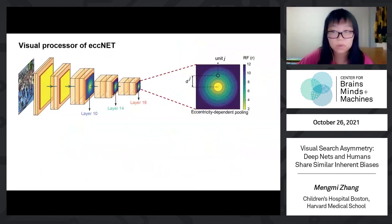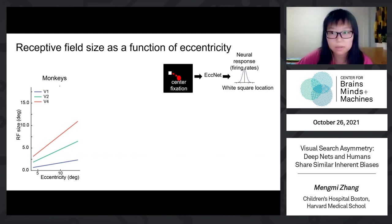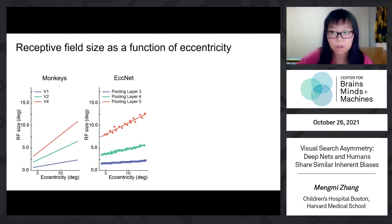Let's zoom into the proposed eccentricity-dependent pooling layer and see how it works. In this example, the model is fixating the center of the image. For any given unit G, its pooling window size is a function of its eccentricity — the further away the unit G is from the center fixation, the larger the pooling window size. We reproduce the plot of eccentricity versus receptive field sizes on macaque monkey. To generate comparative plots for ECCNet, we asked ECCNet to fixate the center of a black image, then introduced a white spot and measured the eccentricity and neuron response of each artificial neuron in the pooling layer. The plot of ECCNet is not an exact match of the monkey plot, but it preserves a similar trend.